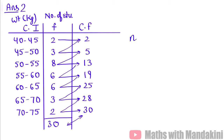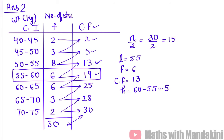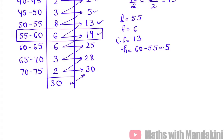The first task is to calculate n by 2 to find the median class. n = 30, so n by 2 = 15. We look in the cumulative frequency to find where 15 falls. The median class is the interval 55 to 60. So we identify L = 55, F = 6, CF = 13 (cumulative frequency of the preceding interval), and h = 60 minus 55 = 5.